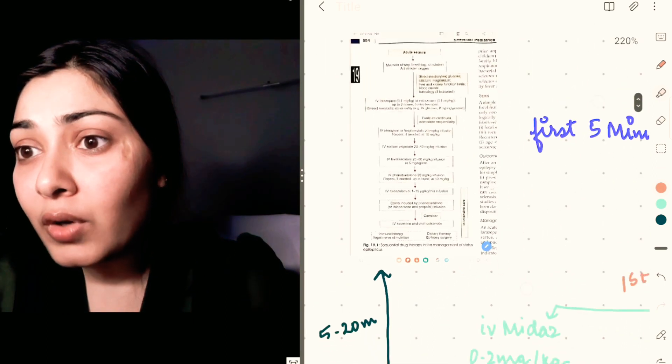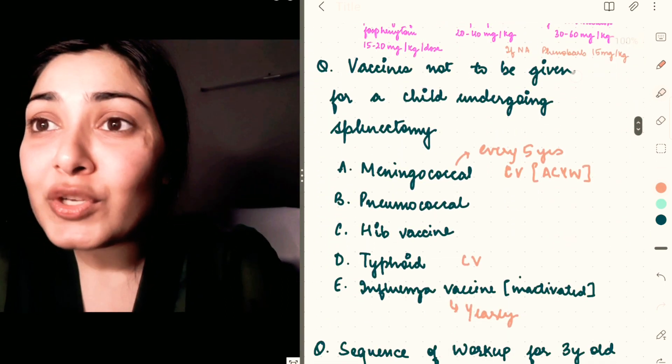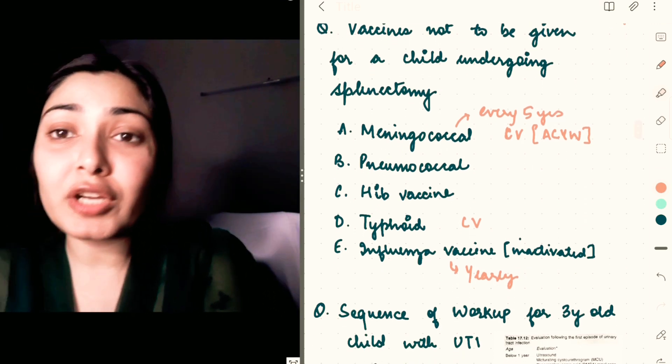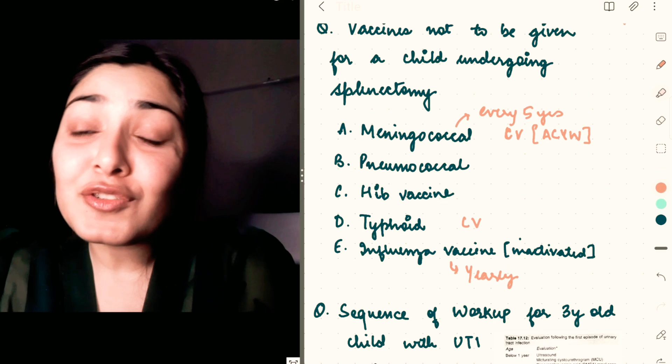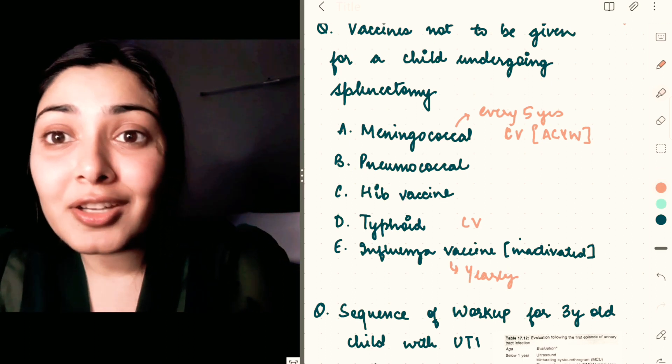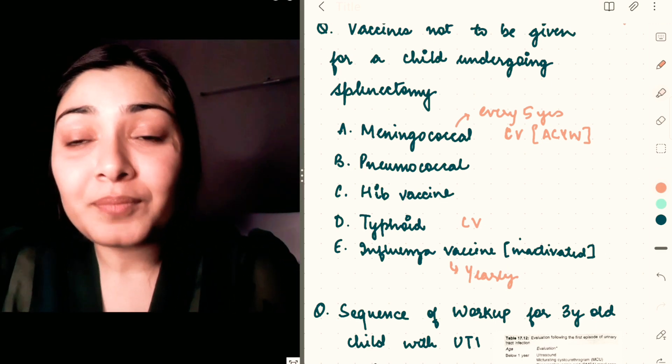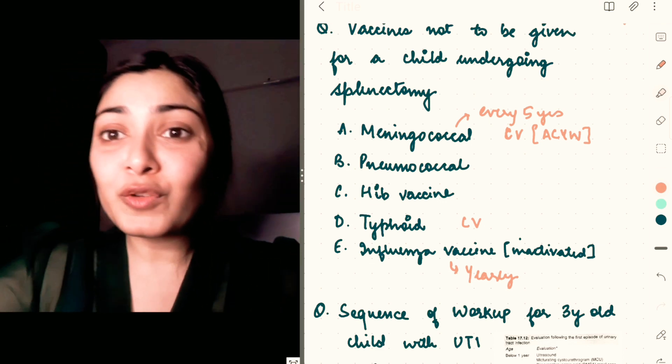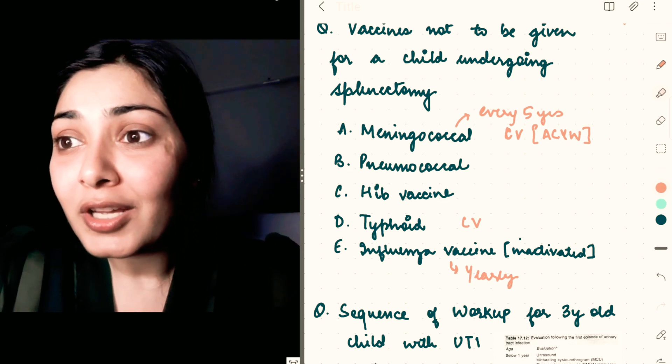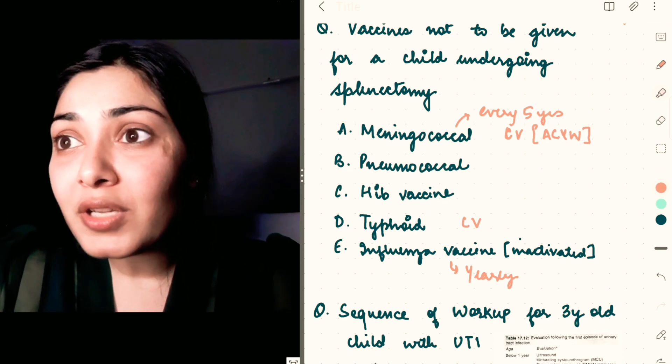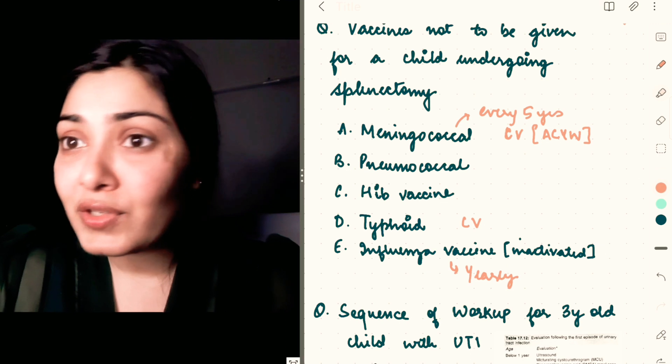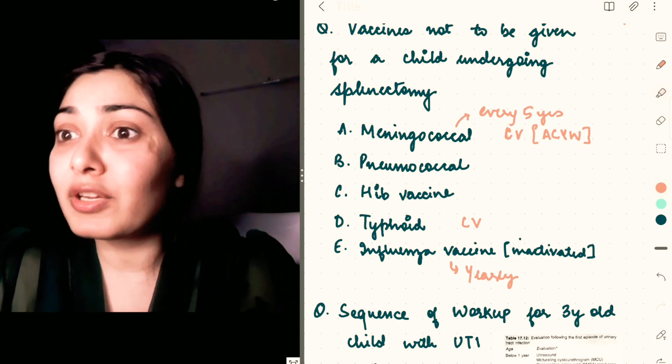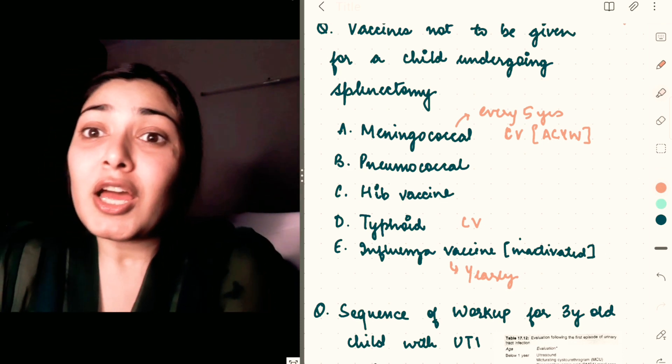Now coming to the next question—it was a vaccine question. Vaccines that are not to be given in a child undergoing splenectomy. Actually, all the options that I could recollect are given in a child that has undergone splenectomy, so I didn't know which one was the odd one out if there was one. The options I could recollect were: meningococcal, which is given; pneumococcal, which is given; Hib vaccine, that should be given; typhoid vaccine, should be given; and influenza vaccine, should be given.